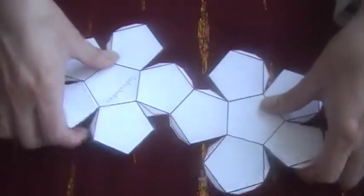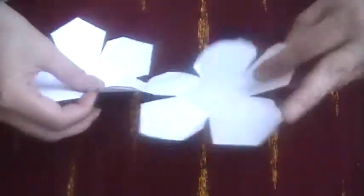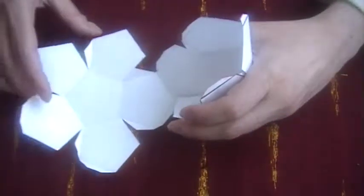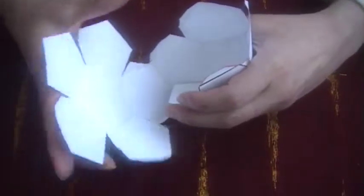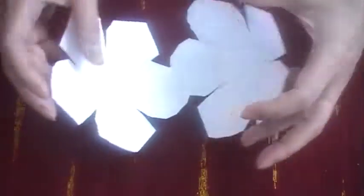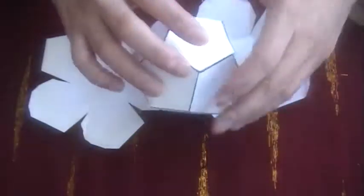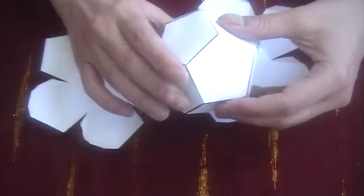When we fold this shape up, one set of six forms one half of the solid like this, and the other set of six forms the other half of the solid. It comes together to close up the solid so that it forms this dodecahedron.